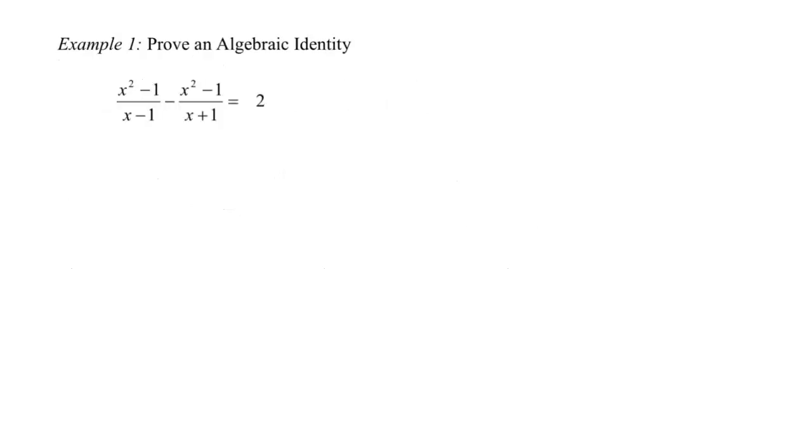In example one, I'm going to start you off with an algebraic identity proof, meaning there's not going to be any trig involved in this proof, but we are going to still use some of the strategies that we have discussed. The first thing I notice here is that the left hand side is definitely the side that I want to start on because it is the more complicated side. I want to show that the left hand side is equal to two.